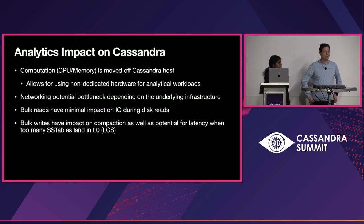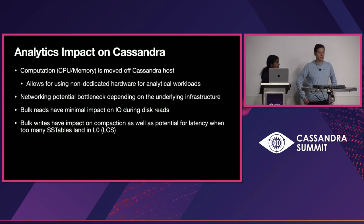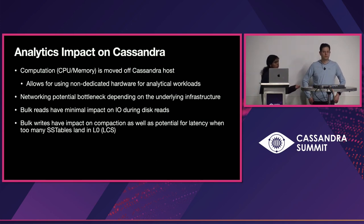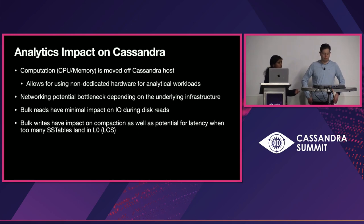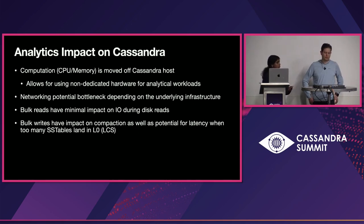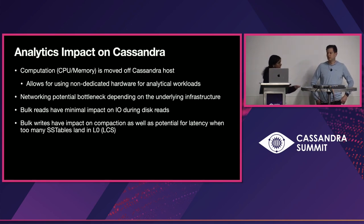With the analytics project, bulk reads and writes are at least 30x faster. Computation needs for bulk reading data out of Cassandra are now moved off Cassandra into an isolated process — Sidecar. Bulk reads through Sidecar have minimal impact on I/O during disk reads, and we have throttlers in place for checking both the bandwidth used and the number of connections created to avoid overuse of CPU.